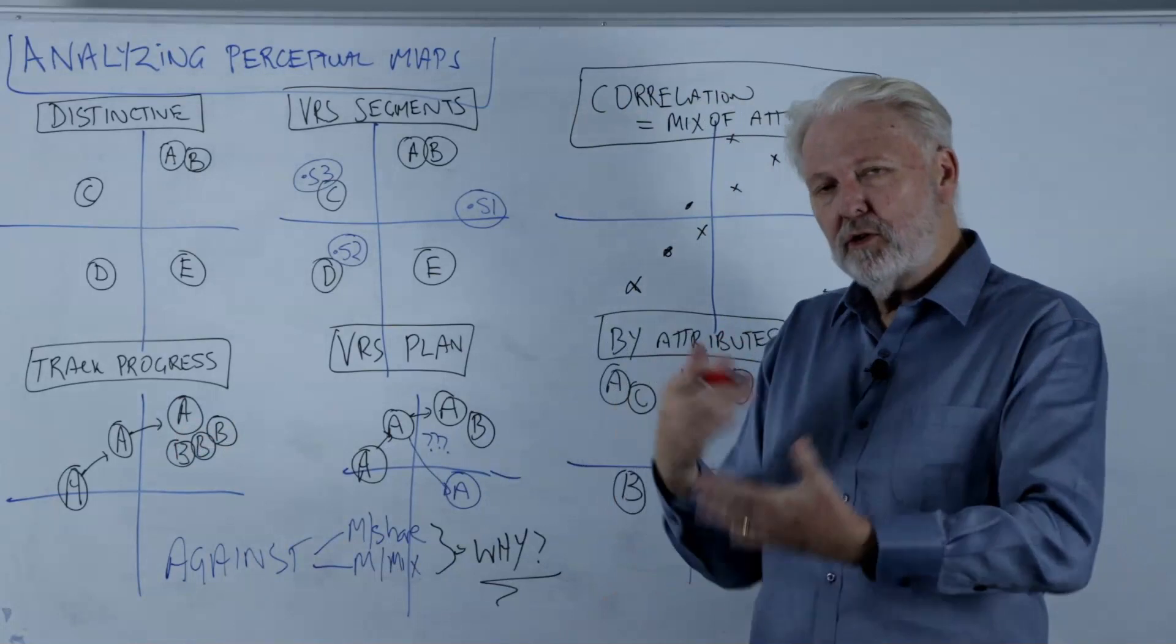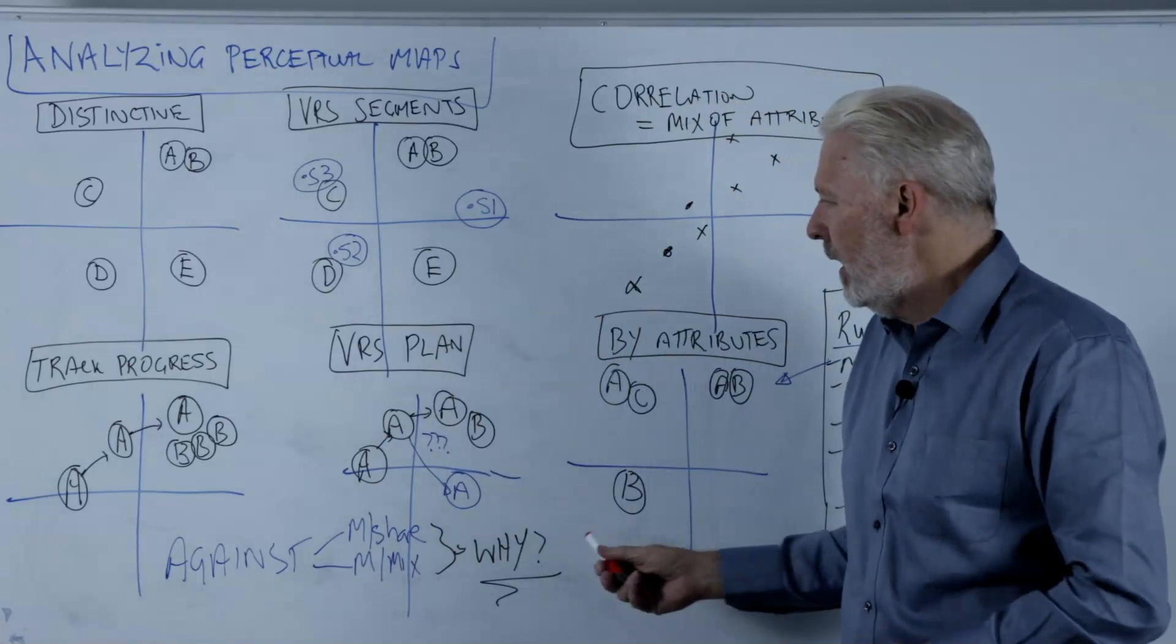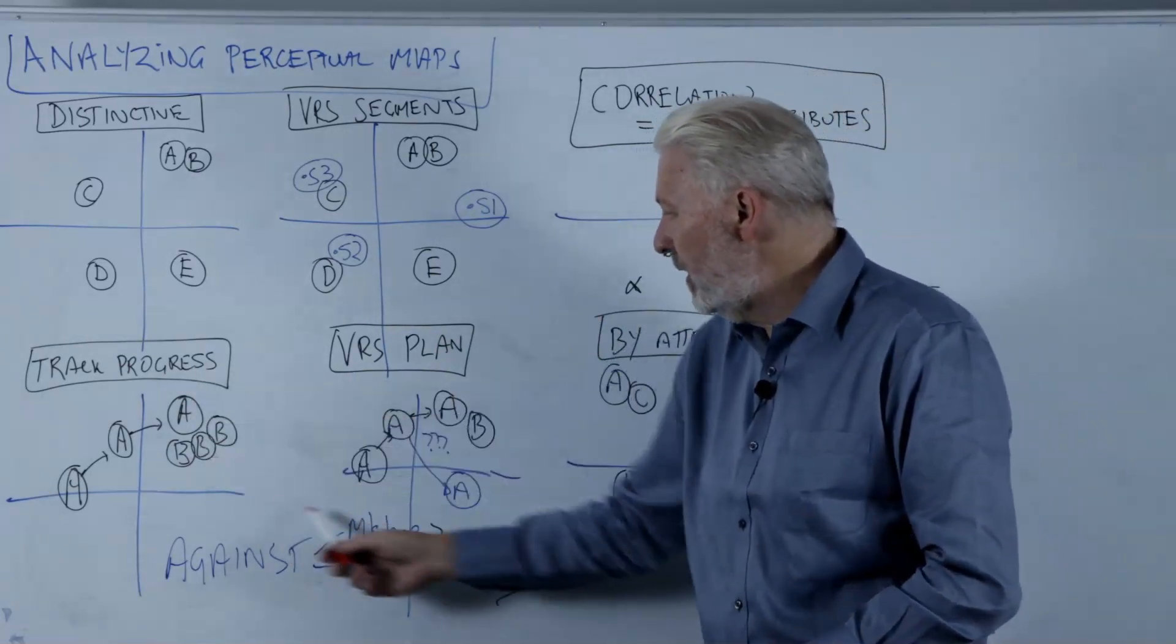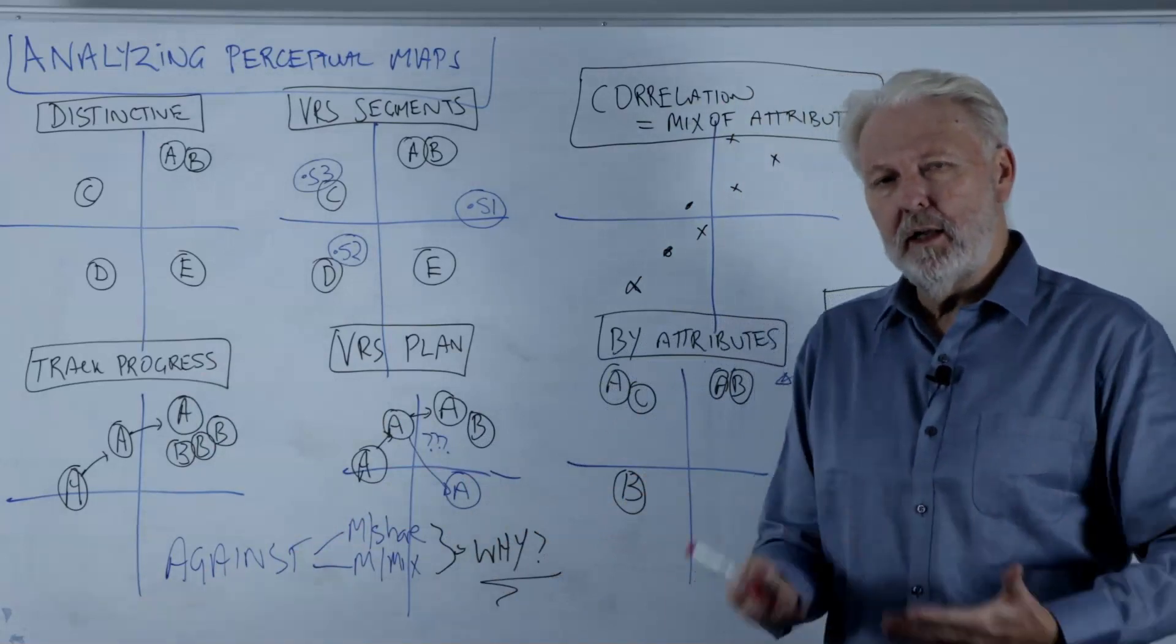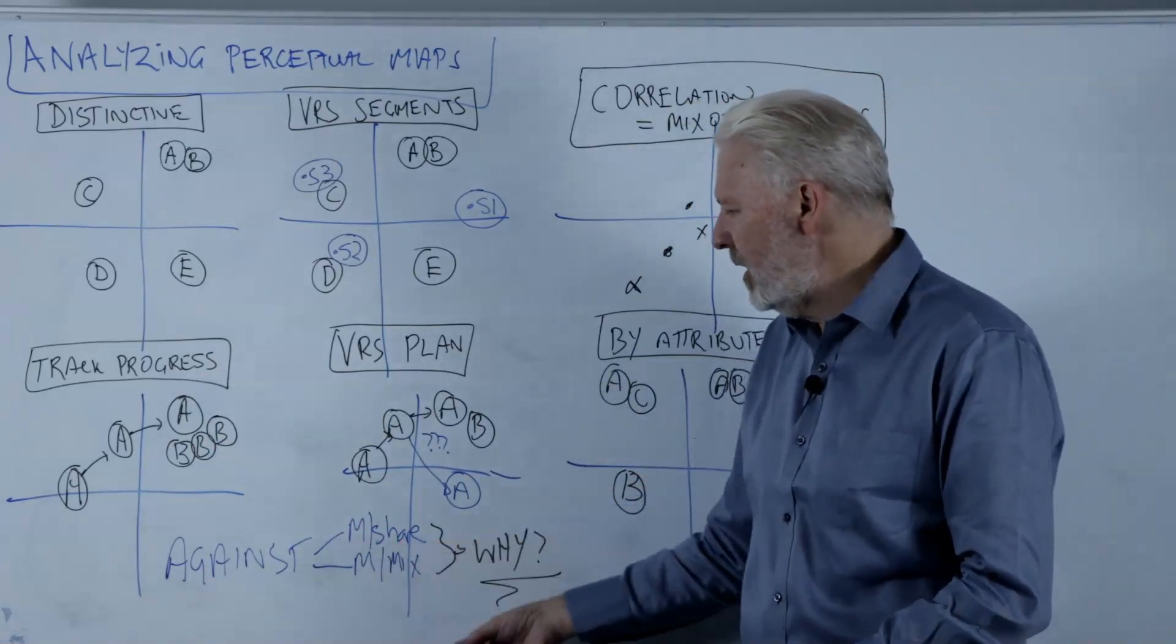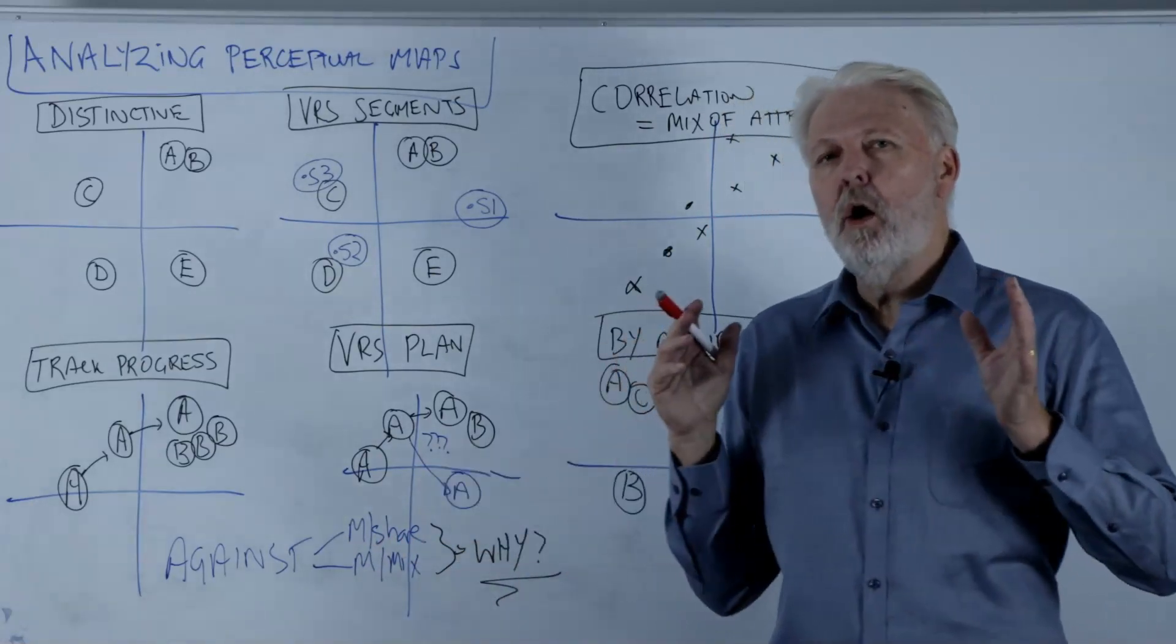And then we backtrack and go, okay, what went wrong? What do we fix? What do we do differently? And what we want to do with these two in particular is compare it or use other marketing metrics. So in particular, market share, marketing mix changes. And what we want to do is work out why. Why is market share going up and down? Why is our positioning responding to these marketing mix changes?